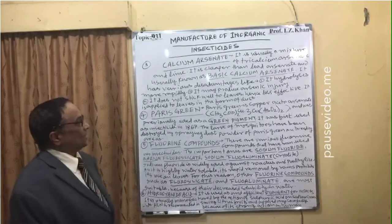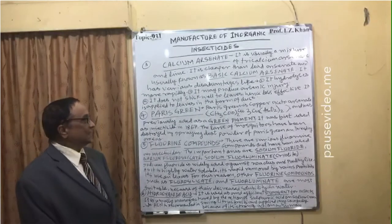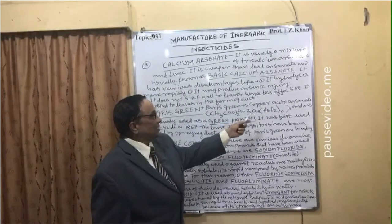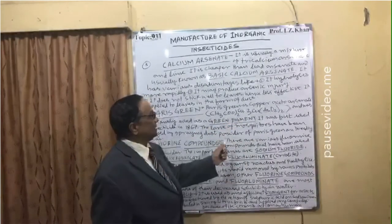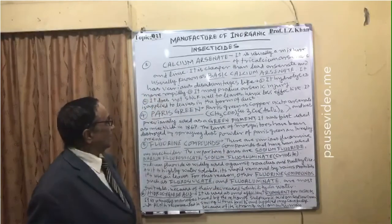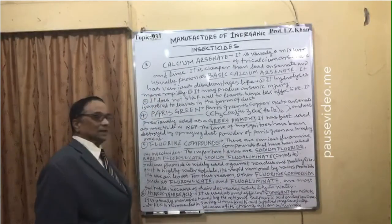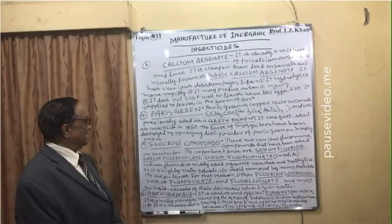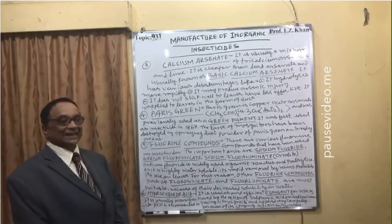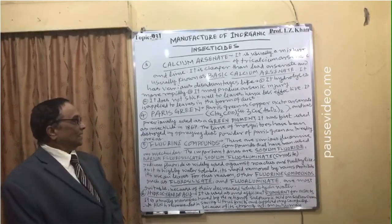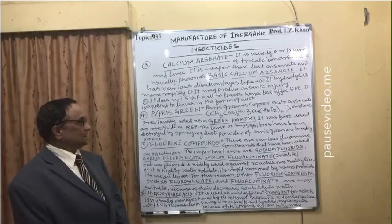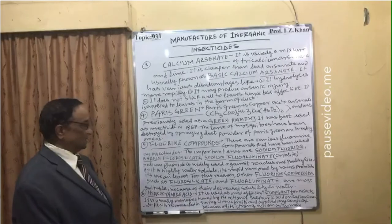Number four: Paris green. Paris green is copper aceto arsenate, that is (CH₃CO)₂Cu · 3Cu(AsO₂)₂. It was previously used as a green pigment in the form of dye. It was first used as an insecticide in 1867. The larvae of mosquitoes have been destroyed by spraying dust powder of Paris green on breeding areas.